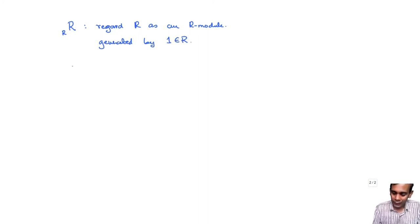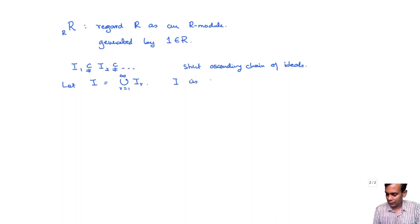Now in this R, we had strict ascending chain of ideals. Let I be the union of these ideals. Then I is again an ideal and so it is a submodule of R. It is an R submodule. We have discussed this before, that ideals of R become submodules of R when we regard R as an R-module.